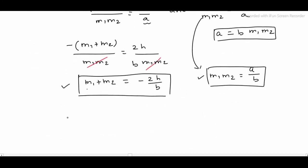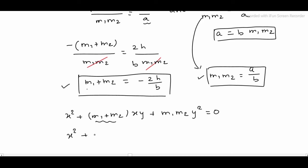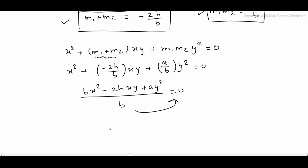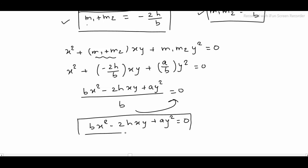The perpendicular equation is x² plus (m1 plus m2) into xy plus m1m2 into y² is equal to 0. Substituting the values: x² plus (minus 2h divided by b) into xy plus a by b into y² is equal to 0. Multiplying through by b: bx² minus 2hxy plus ay² is equal to 0. This is the required equation of the perpendicular pair of lines. Thank you.